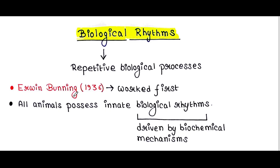Arvind Bunning in 1936 worked on biological rhythms for the very first time. All animals possess innate biological rhythms which are driven by biochemical mechanisms. Innate means from birth, so animals possess this property from their birth.